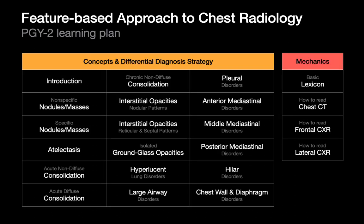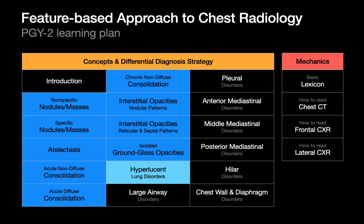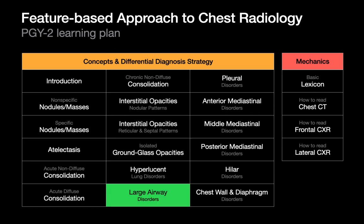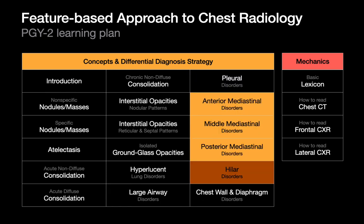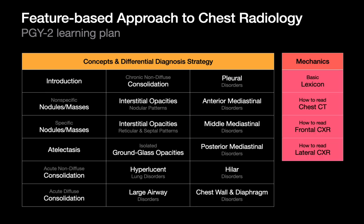We're going to break down what we'd like you to learn during your first rotation on chest into 18 presentations focusing on concepts and strategy for making differential diagnoses, and four talks about the mechanics of getting the work done — the vocabulary, and basic tips on how to read a CT or frontal or lateral chest x-ray. The first 10 talks are on diseases of the lung, one on large airways (trachea and bronchi), one on the pleura, four on mediastinum and hila, and a final talk on chest wall and diaphragm.